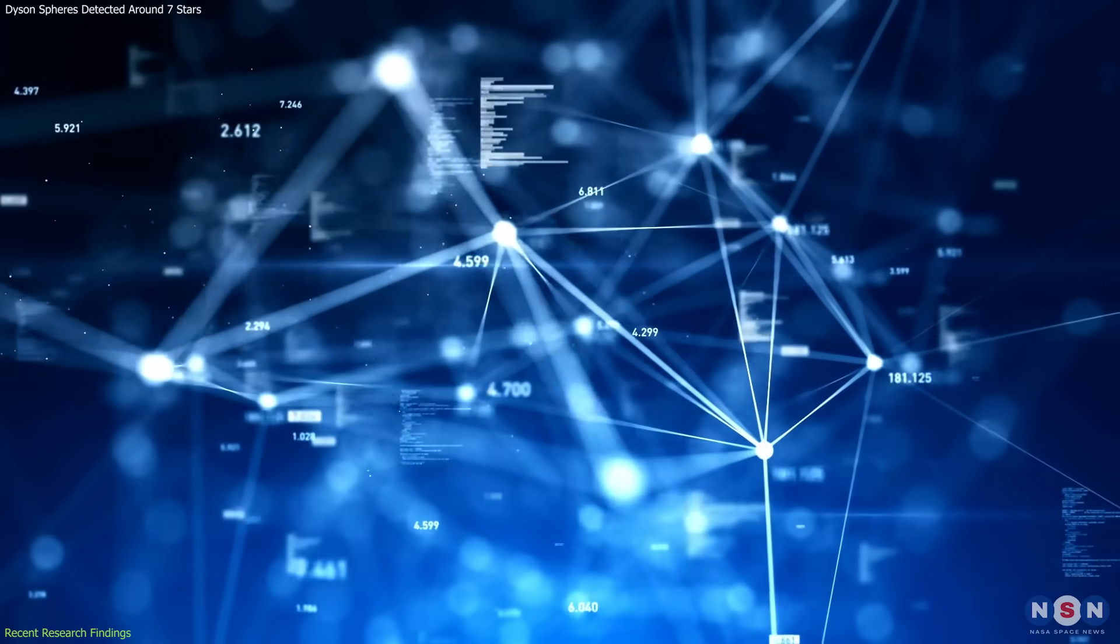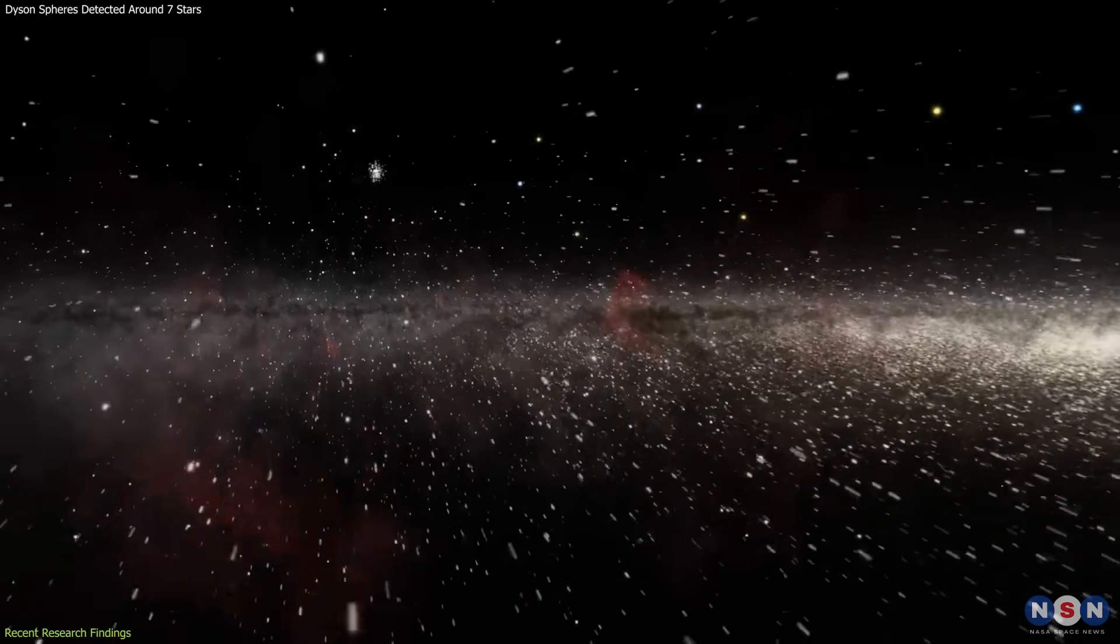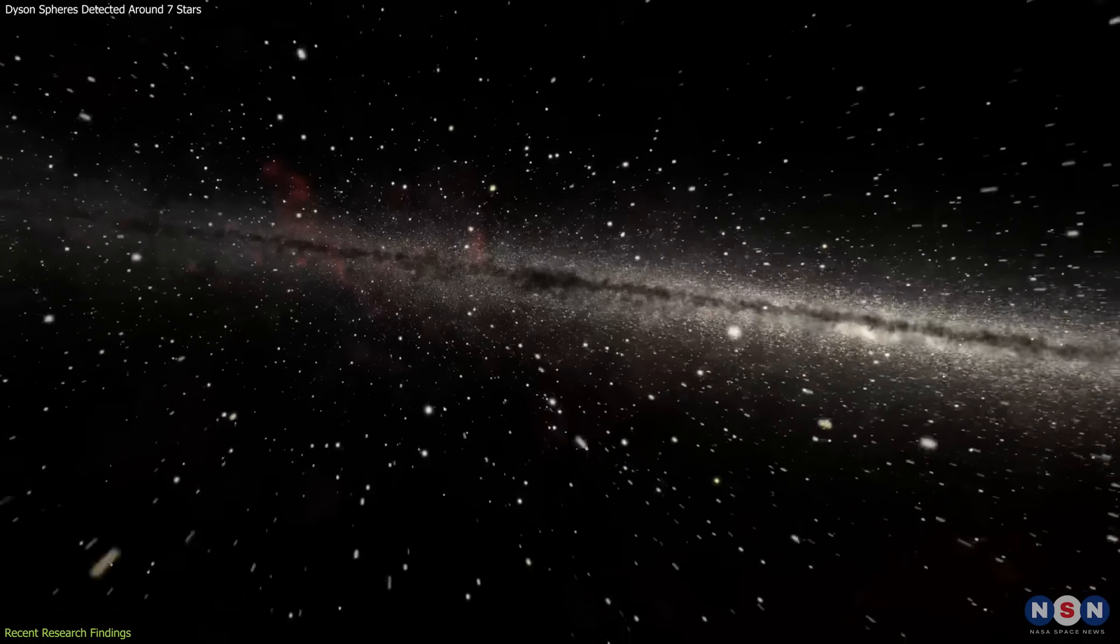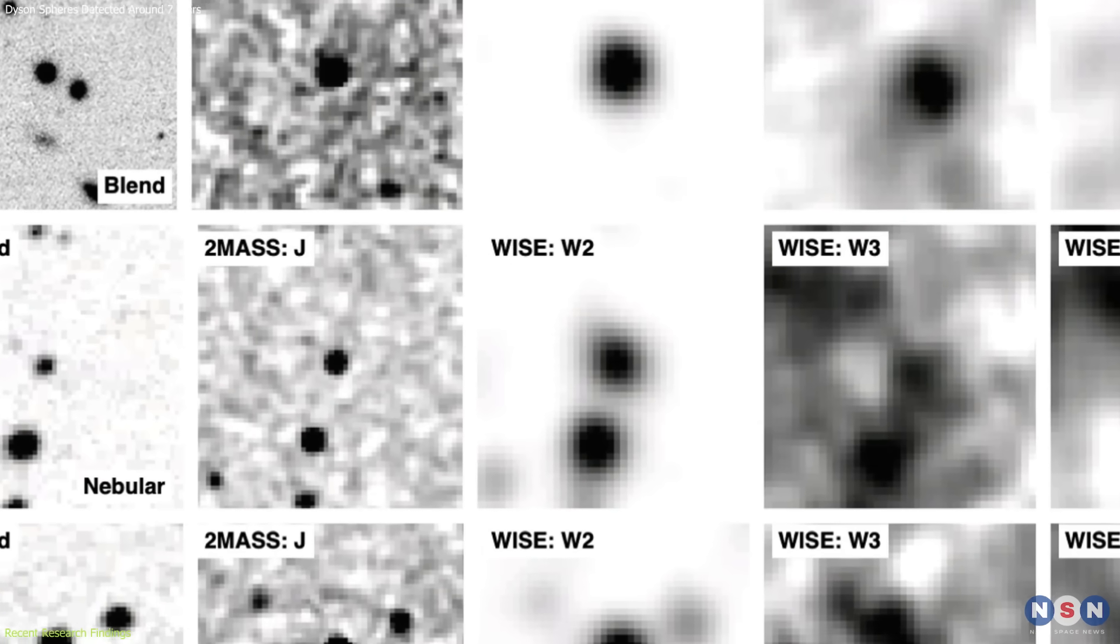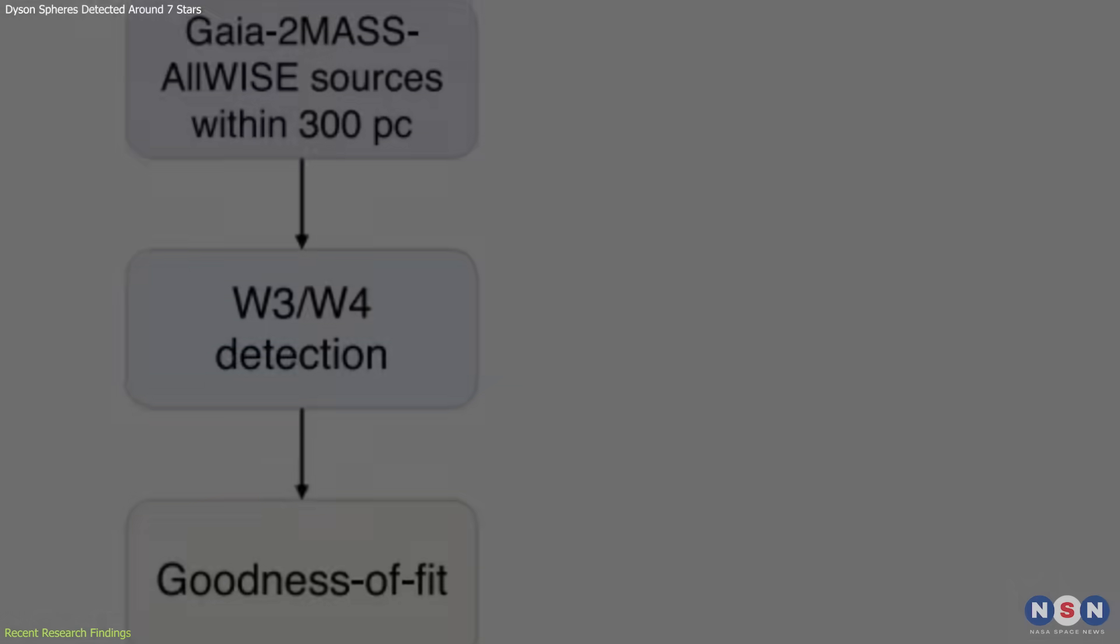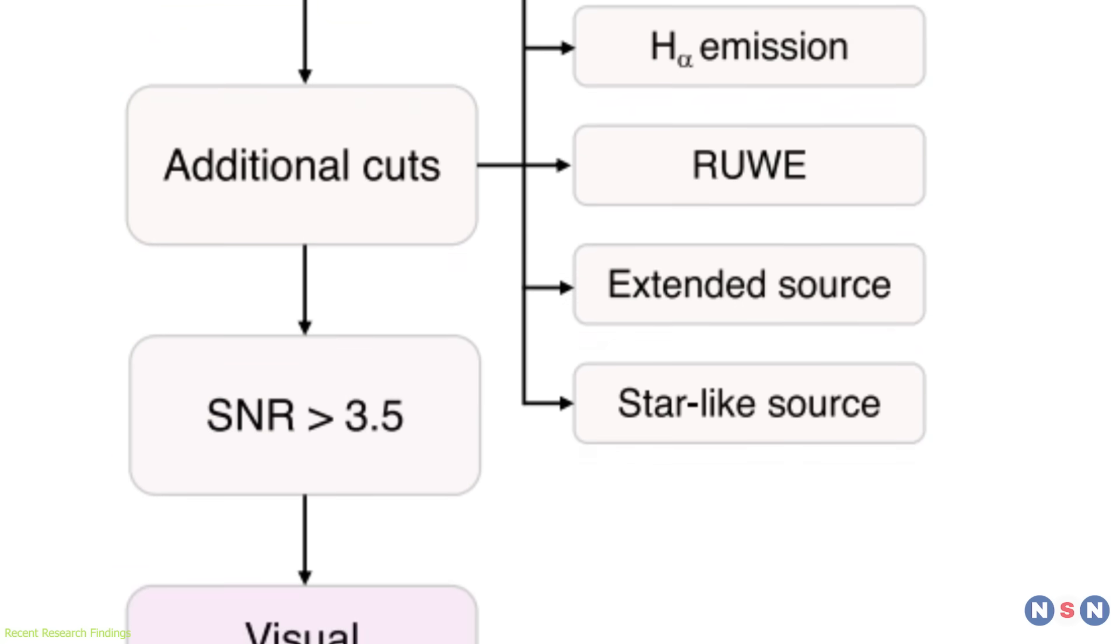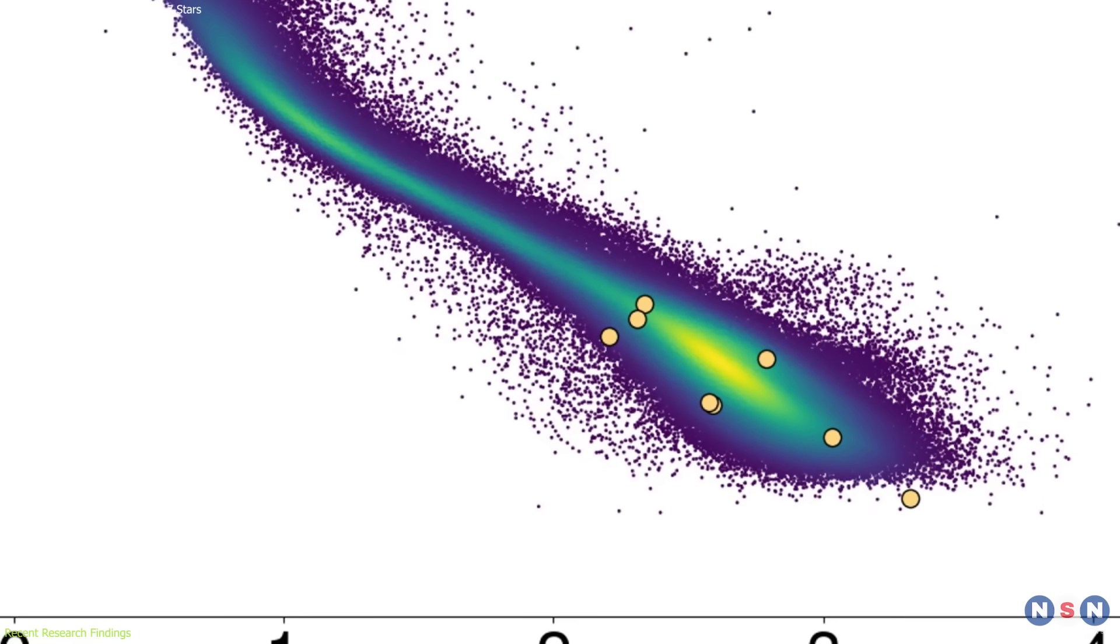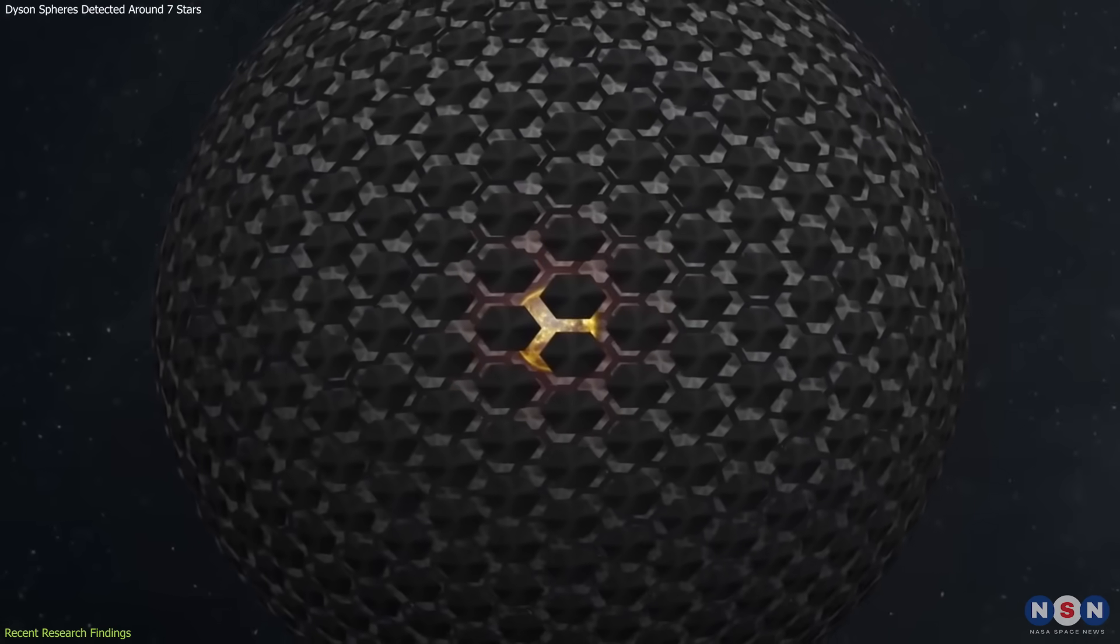They used data from three major astronomical surveys—Gaia, 2MASS, and WISE. These surveys provided a wealth of information about stars across the galaxy, including optical and infrared observations. By combining data, researchers aimed to identify stars exhibiting infrared excess emissions that could not be explained by natural phenomena. They developed a specialized data pipeline to sort out the data and filter false positives. They began by examining around 5 million sources. After filtering and analysis, they identified seven stars with infrared excess emissions consistent with the presence of Dyson Spheres.